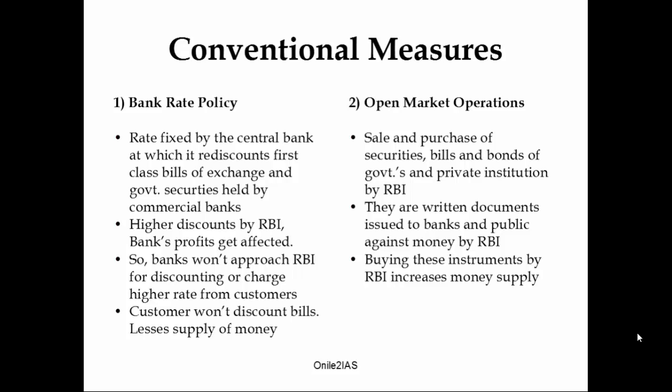Under conventional measures, the first one is bank rate policy. Bank rate policy is the rate fixed by the central bank at which it rediscounts first class bills of exchange in government securities held by commercial banks. Rediscounting refers to bills of exchange, which are written documents that assure payment of money by purchaser to seller for goods purchased at a future date. If the holder needs money urgently, he approaches the bank to get the bill discounted and gets money in advance before the maturity date of the bill.